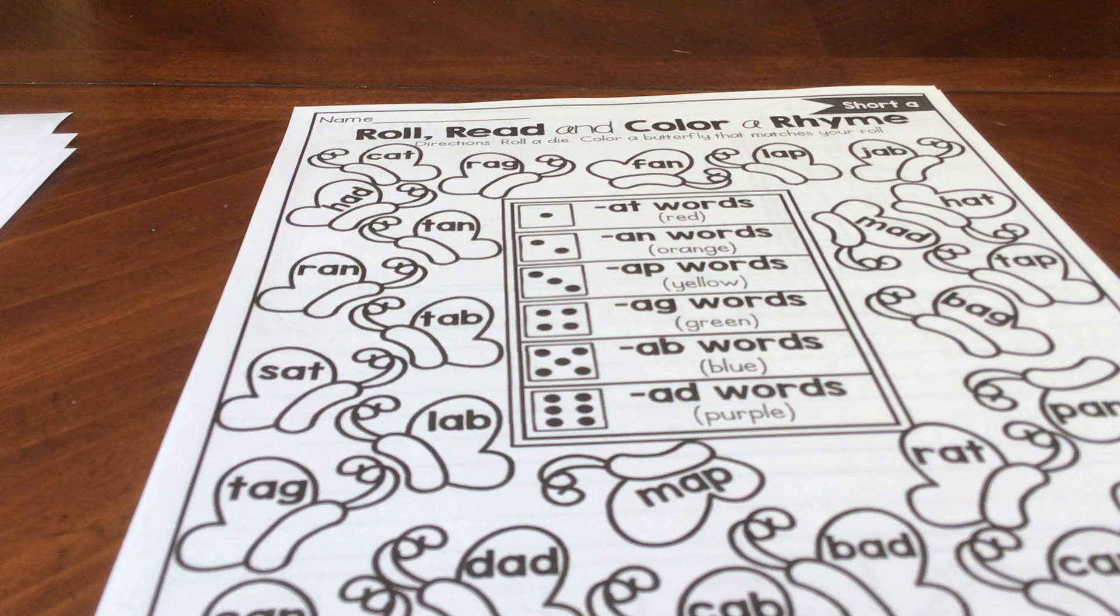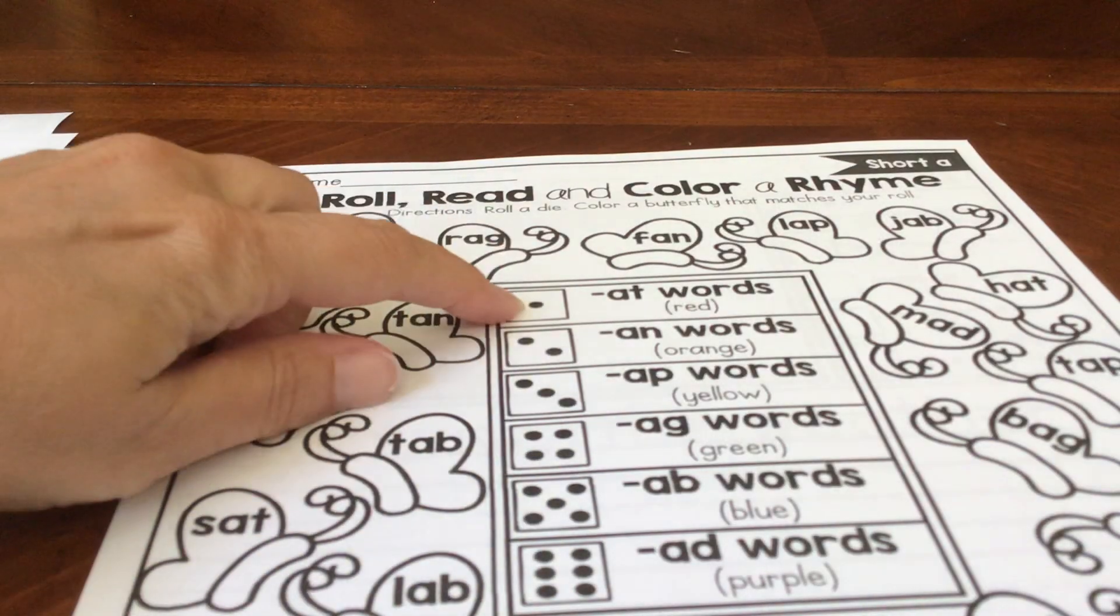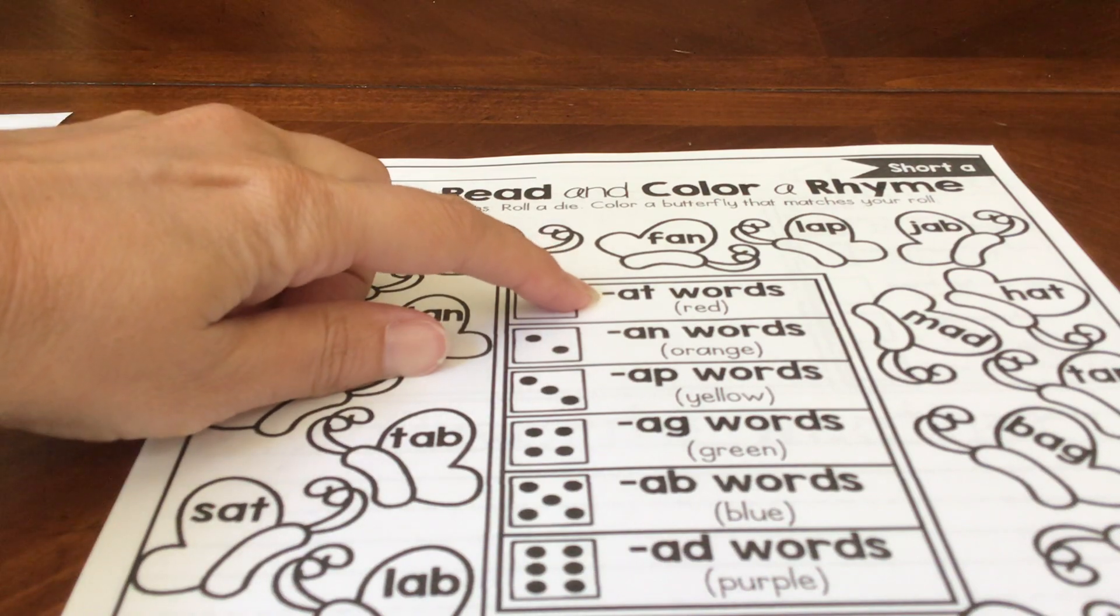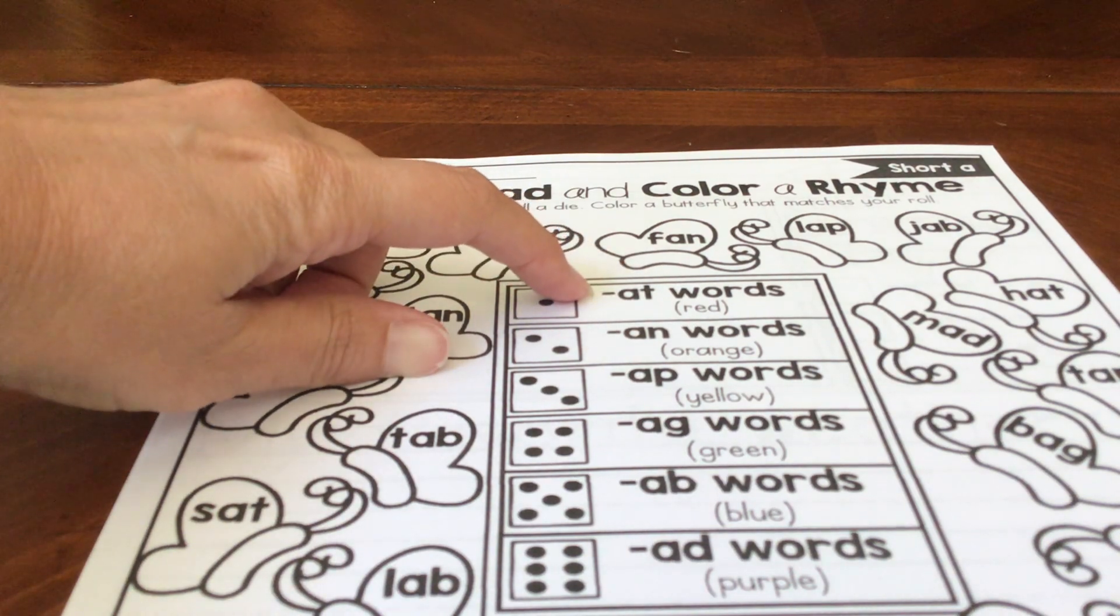Now we're going to roll, read, and color a rhyme. If you have a dice, you can use a dice to do this. You roll it. And if you get a number one on your dice, you're going to look for words that say at.